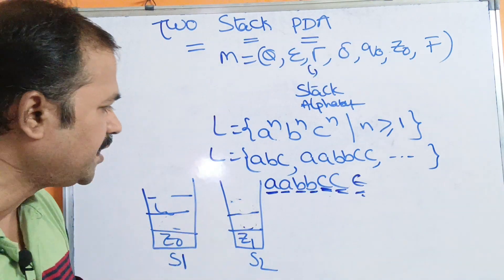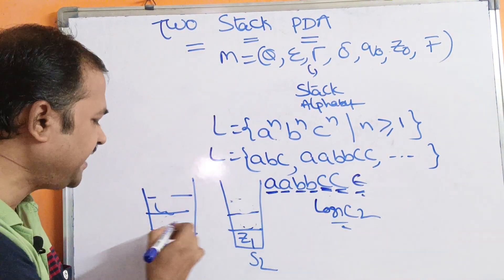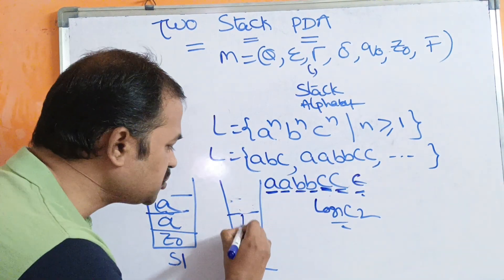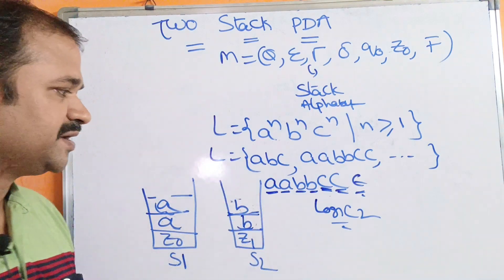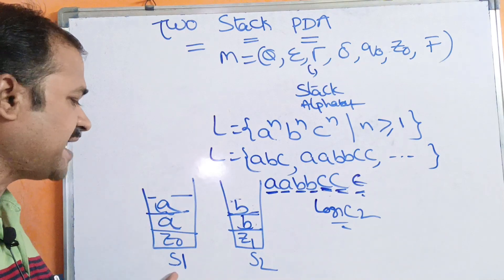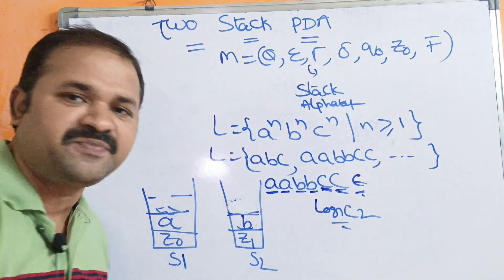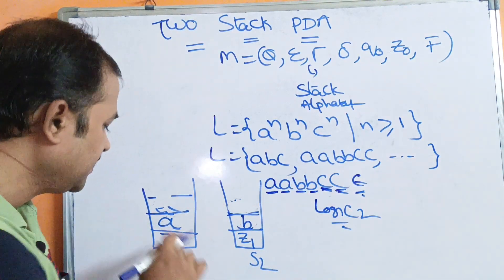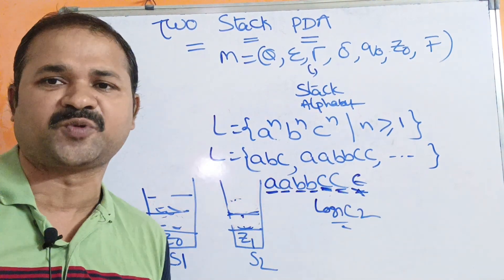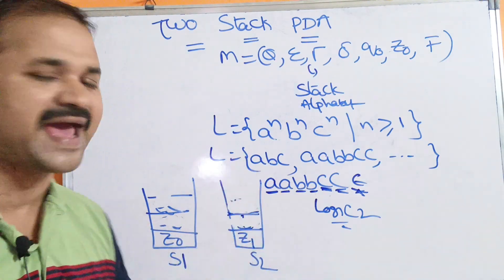Logic 2: if the input symbol is A, push A onto stack 1. If the input symbol is B, push B onto stack 2. If the input symbol is C, pop A from stack 1 and B from stack 2. Once all characters are processed and stack 1 and stack 2 are empty, the string is accepted.